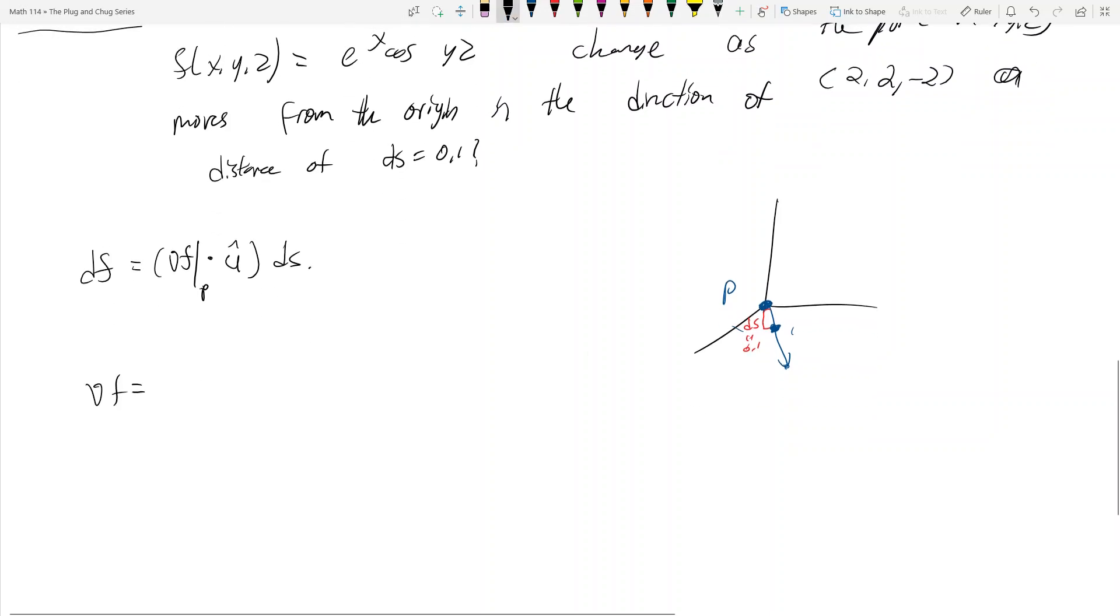In our case, the gradient of f is: partial of x stays the same, partial of y I get negative z e to the x sine yz, and then partial with respect to z, I get negative y e to the x sine yz. Now we've got to evaluate this guy at the point, the origin, which is then just 1, 0, 0.